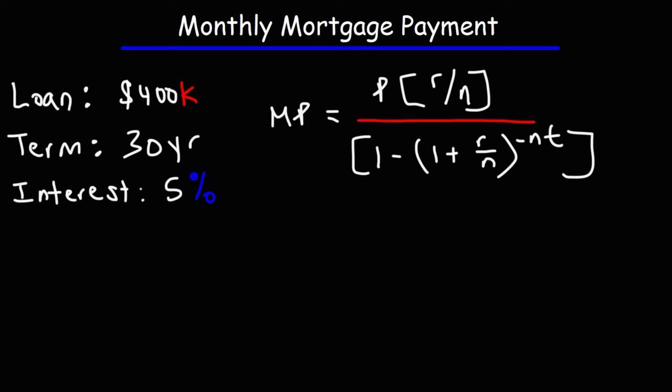So in this problem, the principal is basically the balance of the loan, which is $400,000. R, so let's write this down. So P is $400,000.